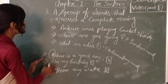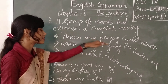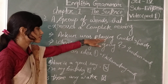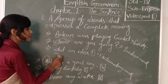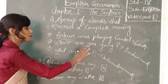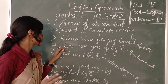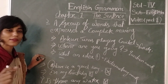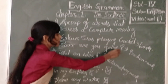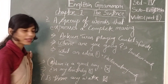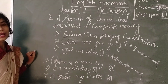Look at these three correct examples and compare them. 'Ankur was playing cricket' — there are more than one word, it expresses a complete meaning, there is a full stop, and there is a capital letter at the beginning. So this sentence is correct. Second sentence: 'Where are you going?' — as I already told you, if a sentence starts with a WH word, you put a question mark at the end, not a full stop. If you put a full stop after 'Where are you going,' the sentence will be incorrect.